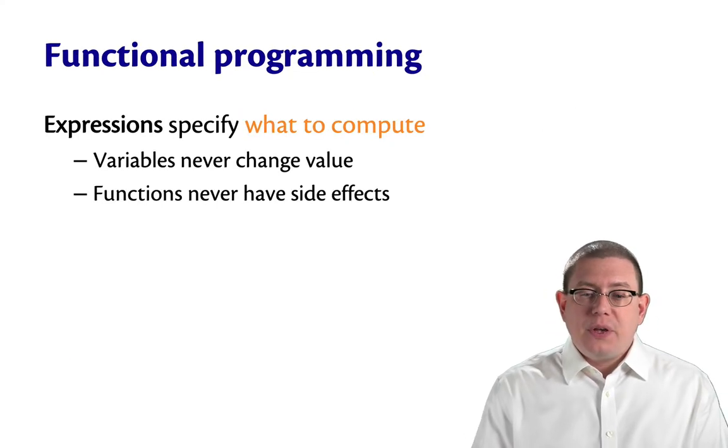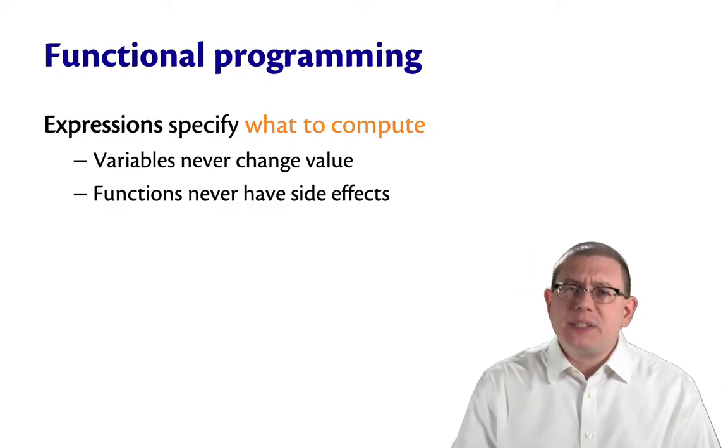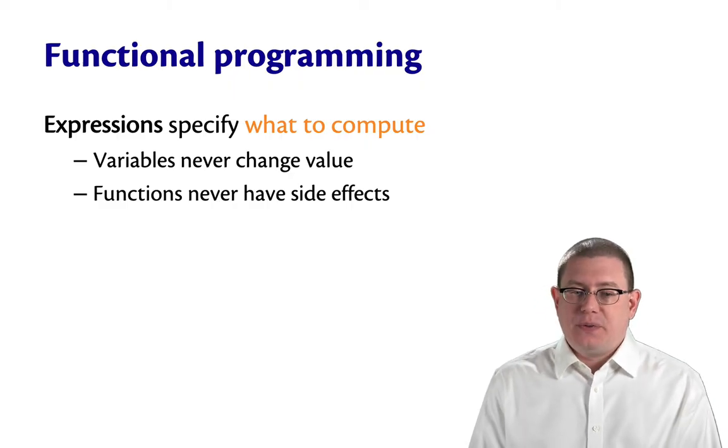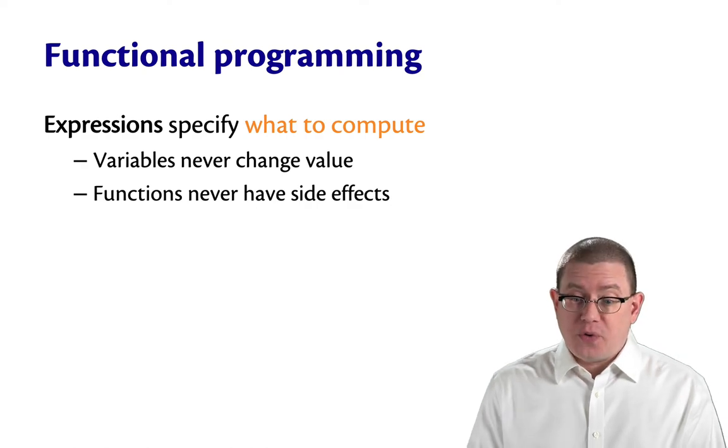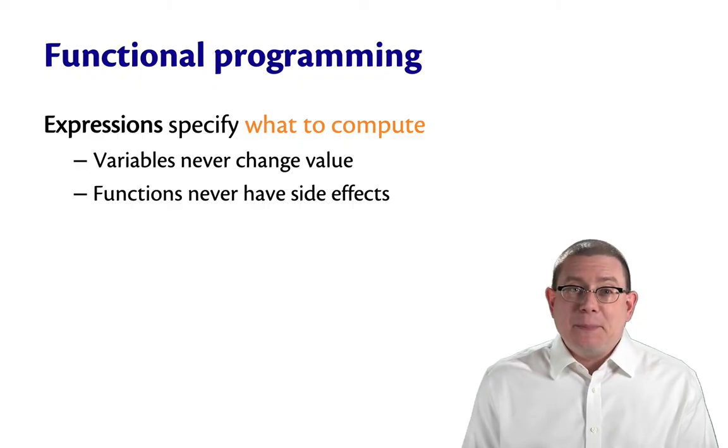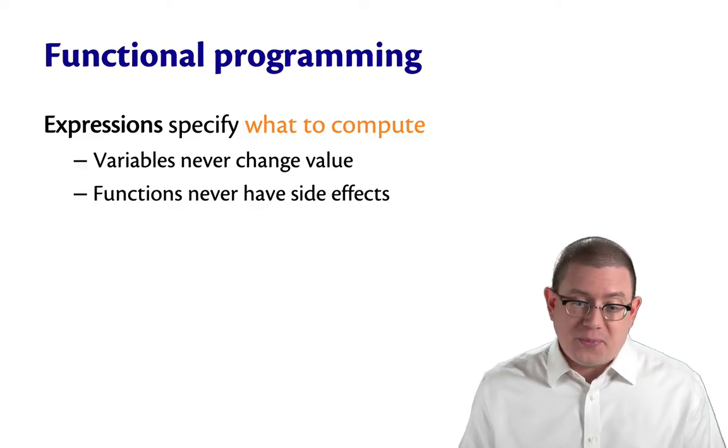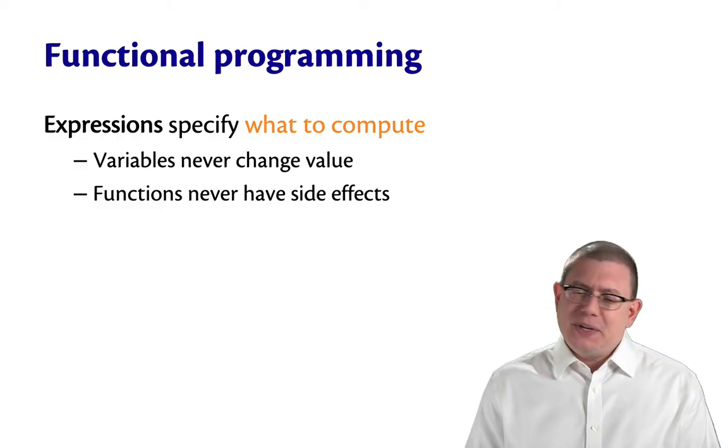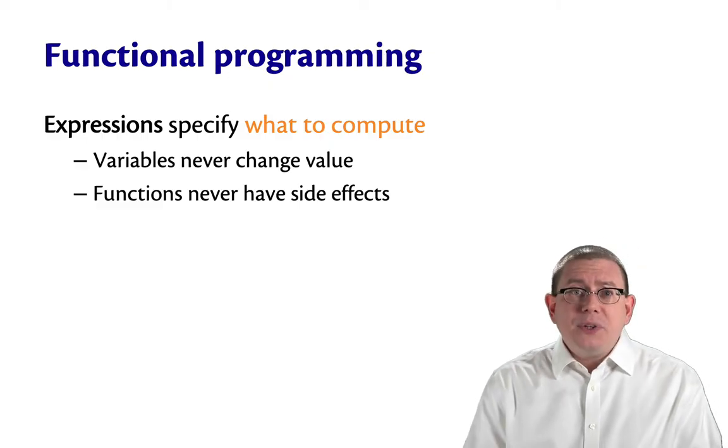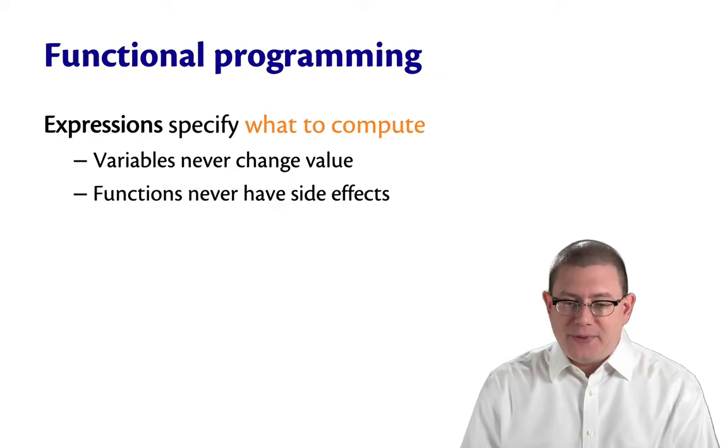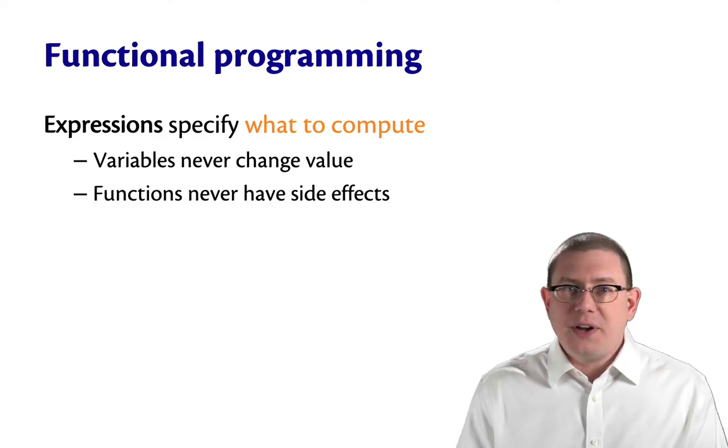In functional programs, we don't have commands so much as expressions. And expressions don't say how to compute. They say what to compute. So in a functional program, variables never change value. That makes the very notion of calling them variables kind of suspect, but it's a word you've come to know and love from other programming classes, so I'm not going to attempt to change that at this point. We could maybe better call them identifiers. But anyway, in a functional language, variables never change values. They just aren't variable in a functional program. Once a variable has a value, it's not going to change. And functions are never going to have a side effect.